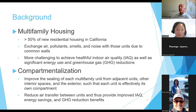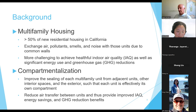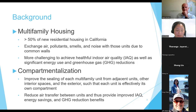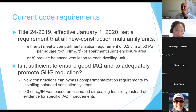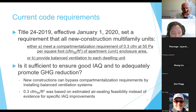Achieving good indoor air quality as well as significant energy savings is more challenging in multifamily buildings. Compartmentalization, or increasing air tightness between units, is a process to improve the sealing of each multifamily unit from adjacent units, other interior spaces, and the exterior, such that each unit is effectively its own compartment. It can reduce air transfer between units and thus provide improved indoor air quality, energy savings, and GHG reduction benefits. Therefore, Title 24 2019, effective January 1st, 2020, required that all new construction multifamily units either meet a compartmentalization requirement of 0.3 CFM per square foot or provide balanced ventilation to each dwelling unit.